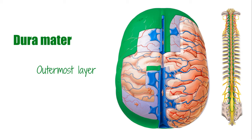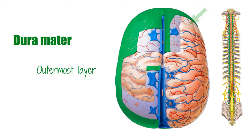You can see these layers here on this diagram. The green layer is the dura mater, that light purplish layer is the arachnoid mater, and the pia mater is that translucent layer covering the sulci of the brain just here.